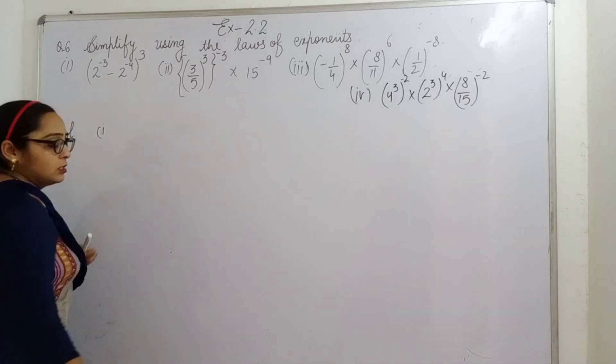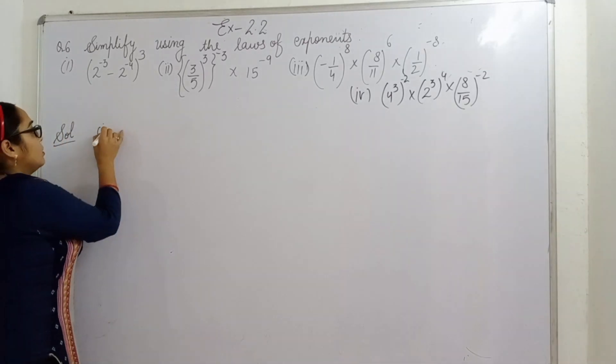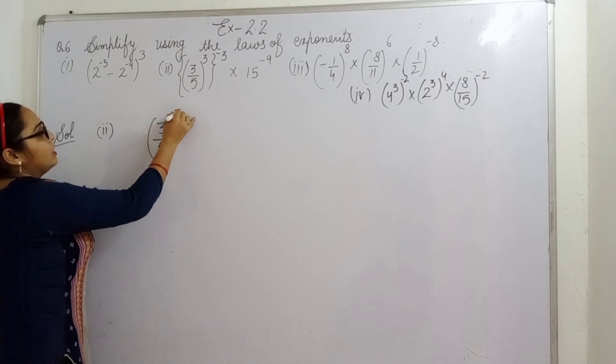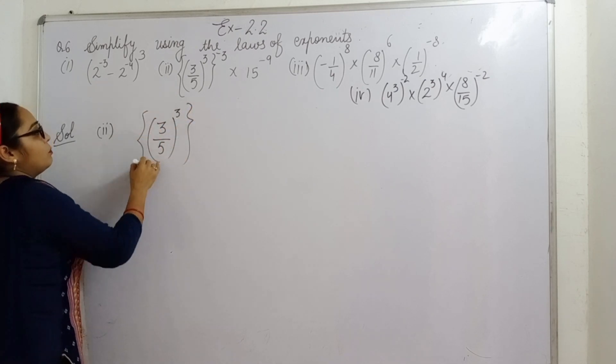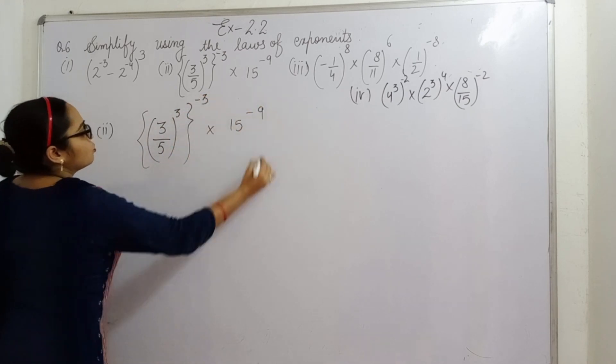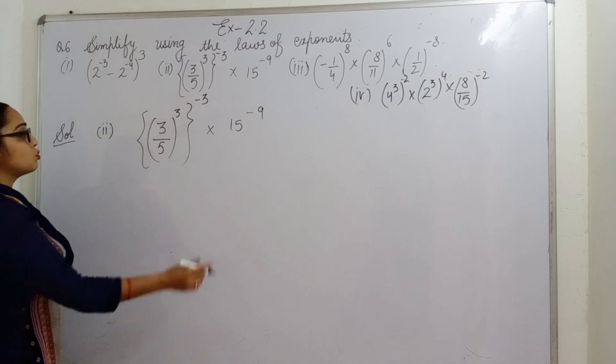Next part is 3 by 5. Second part: 3 by 5 raised to power 3 and again power is minus 3, multiply 15 raised to power minus 9. Firstly let's solve out this one.